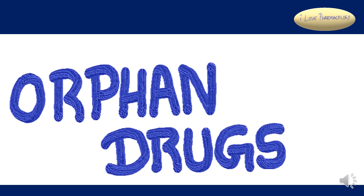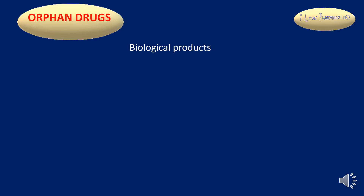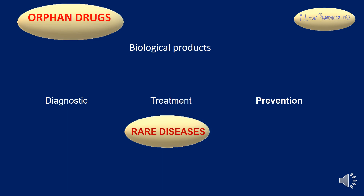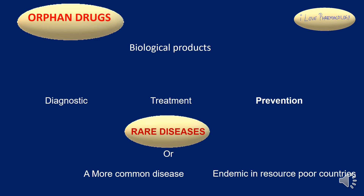Hi guys, welcome to I Love Pharmacology. Today in this session you're going to learn about what are orphan drugs. Orphan drugs are biological products which are used for diagnosis, treatment, and prevention of rare diseases, or a more common disease which is endemic in a resource-poor country.